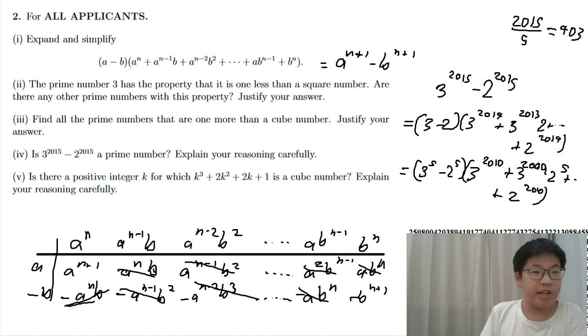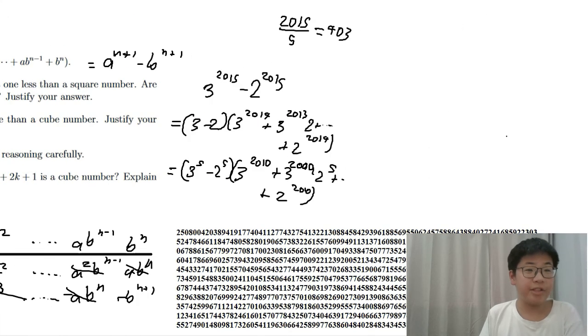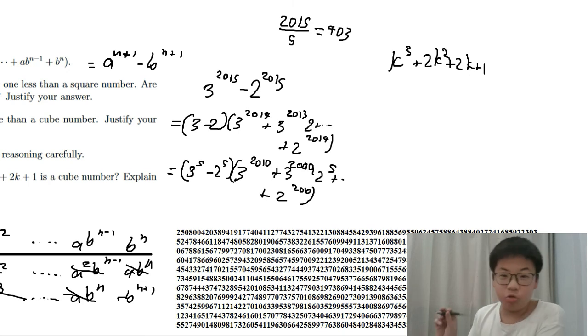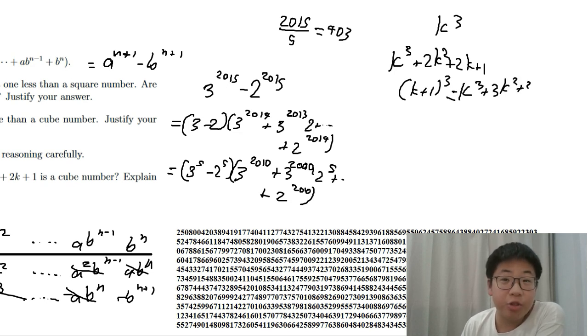Is there a positive integer k for which k cubed plus 2k squared plus 2k plus 1 is a cube number? Now, explain your reasoning carefully. k cubed plus 2k squared plus 2k plus 1. Actually, we do not need the previous techniques described. Because, see, if we have k cubed, k cubed is obviously a cube number. Let me try (k+1) cubed. If you know your binomial theorem, it's k cubed plus 3k squared plus 3k plus 1. So, therefore, this number falls in between 2 cubes. 2 consecutive integer cubes. And so, this can never be a cube number.